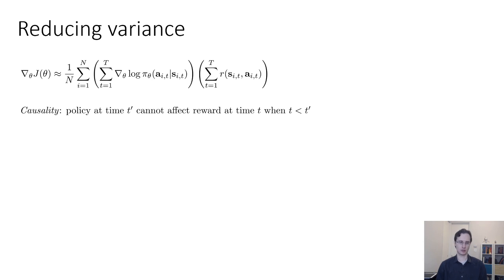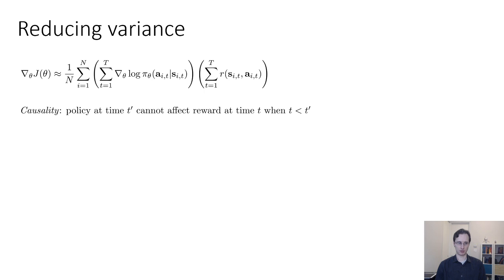This is not really an assumption. This is always true for any process where time flows forward. The only way this would not be true is if you had time travel and could travel back into the past and change your action — but we're not allowed to do that. I'm going to claim that the policy gradient derived so far does not actually make use of this assumption, and that it can be modified to utilize this assumption and thereby reduce variance. You could take a moment to think about where this assumption might be introduced.